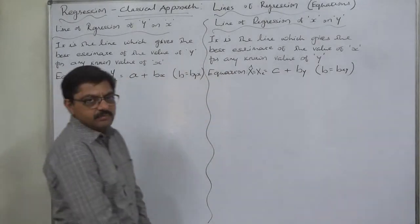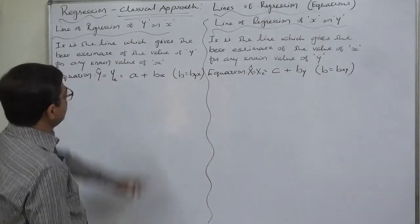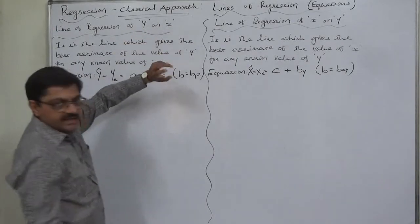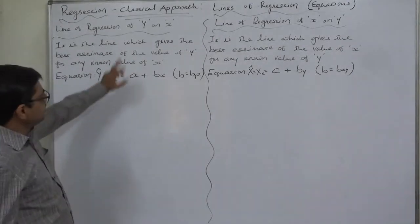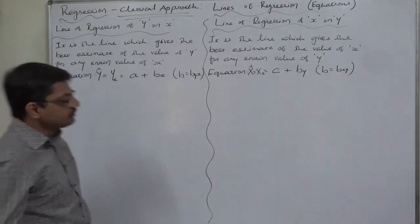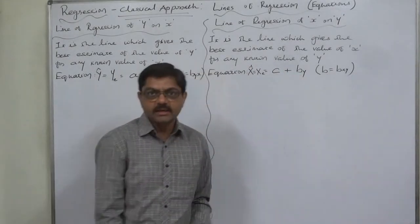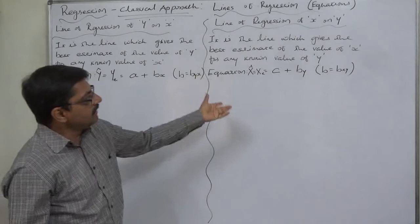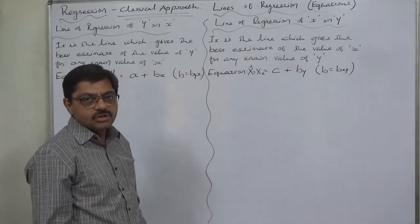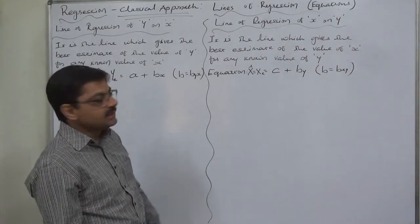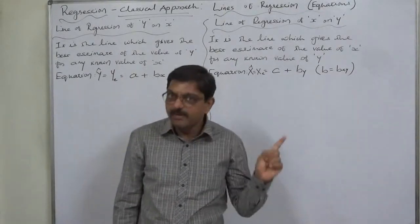We have two dependent as well as independent variables, so logically there are two lines of regression. If variable Y is dependent and X is independent, then it is the line of regression of Y on X, giving the best estimate of Y for any known value of X. Similarly, when X is dependent on Y, the line of regression of X on Y gives the best estimate of X for any known value of Y.